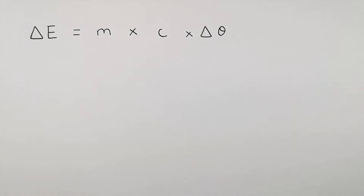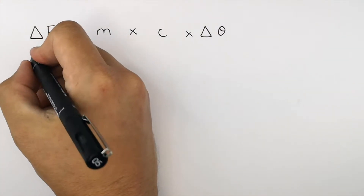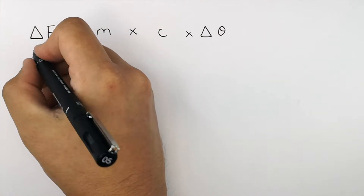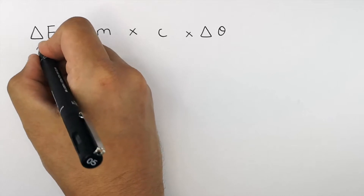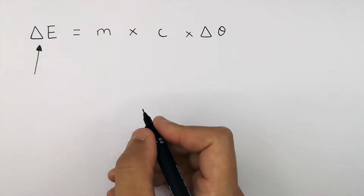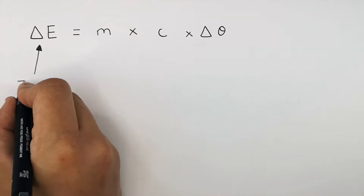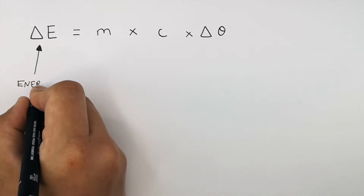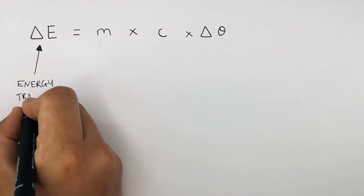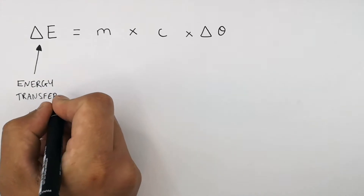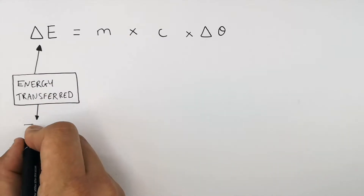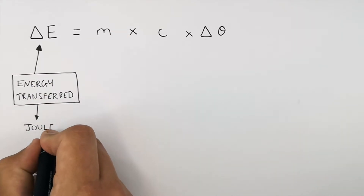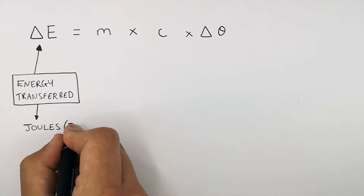The triangle symbol represents 'change in' — we say delta for that. So delta E, the change in E, is the energy transferred into or out of the object. And because it's an energy, the unit is joules.